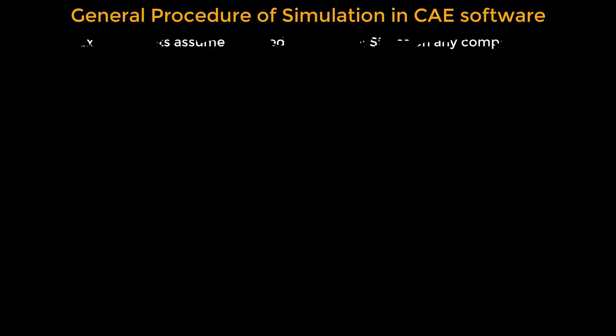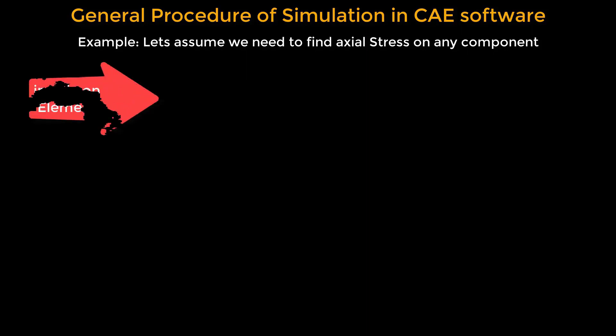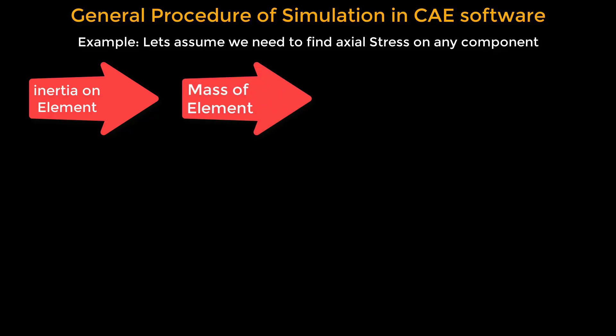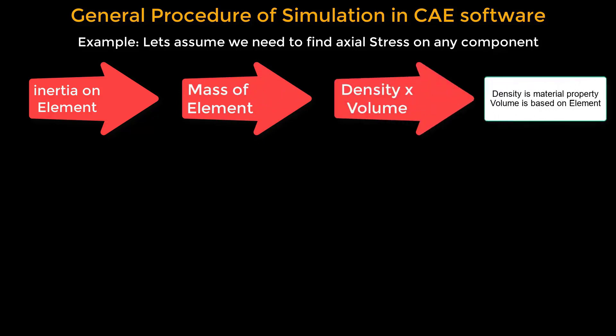Now we'll walk through the general procedure of simulation in CAE software to determine the stress on a component when a load is applied. In any simulation, our first step is to calculate the inertia of the element. Inertia represents the resistance of an object to any change in its state of motion or rest. To find inertia, we need to know the mass of the element. The mass of an element is derived from its density and volume. Density is a material property that we can find in the software's material database — a constant value specific to the material in question.